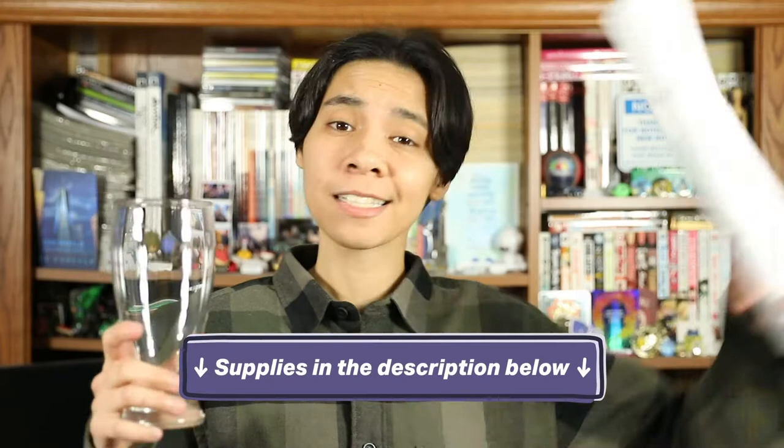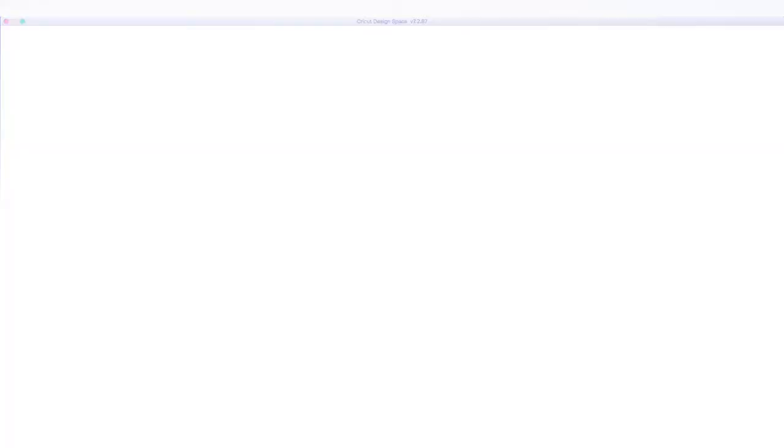For all the other supplies we'll be using, check the description below. And when you have everything to etch your beer mugs and glasses, the next thing we'll need to do is create the stencil that the Etching Cream goes on. So let's get crackin'. We're going to use our Cricut to cut the stencils. Open up Cricut Design Space and create a new project.